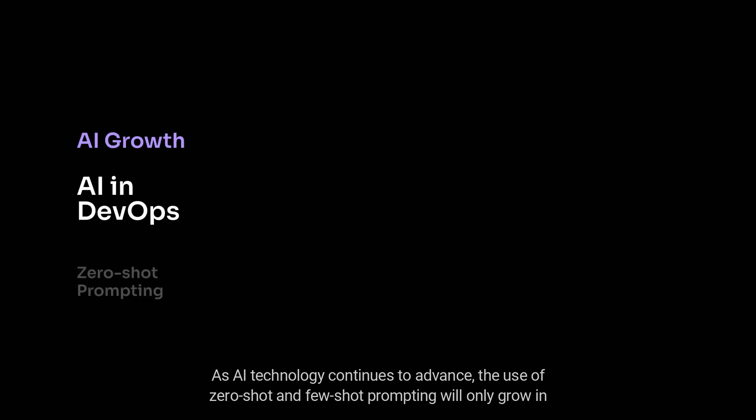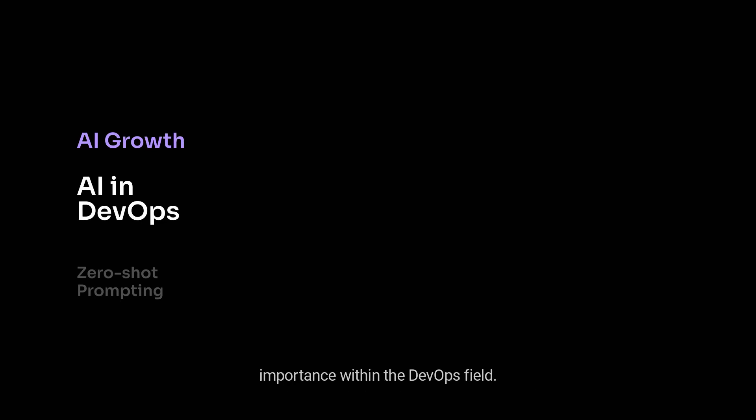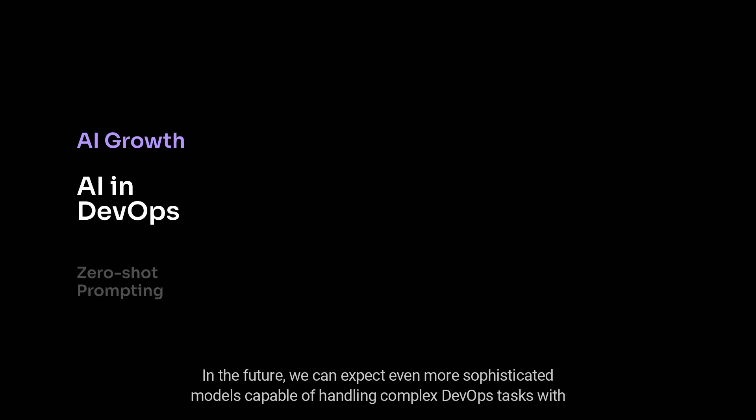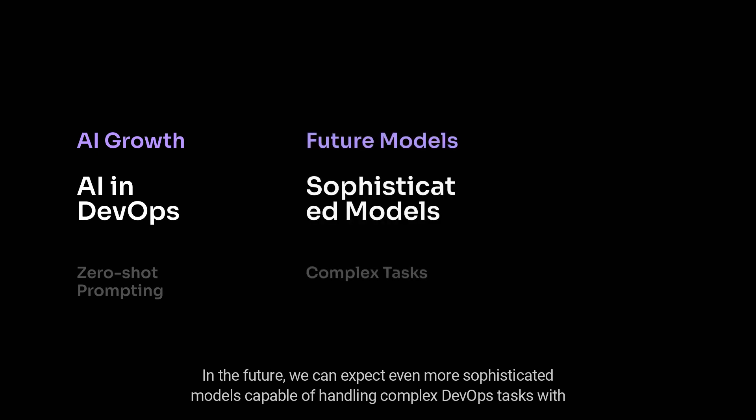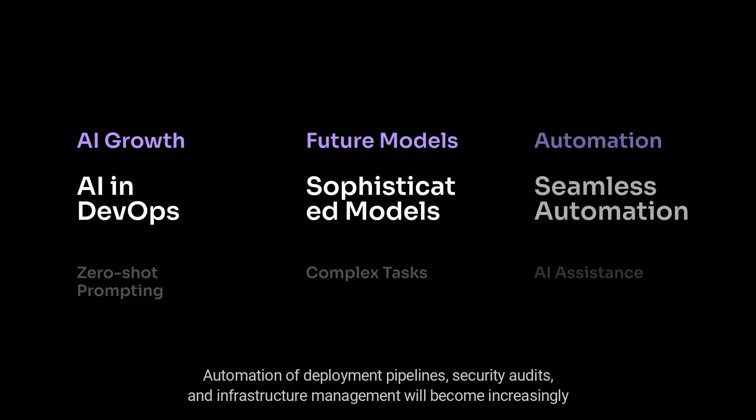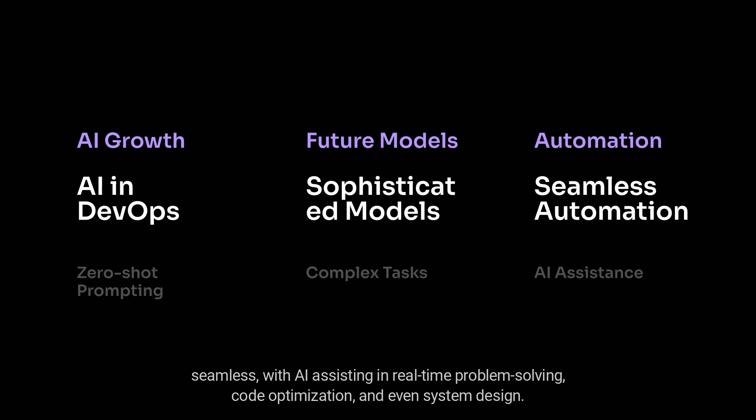As AI technology continues to advance, the use of Zero-shot and Few-shot prompting will only grow in importance within the DevOps field. In the future, we can expect even more sophisticated models capable of handling complex DevOps tasks with minimal human input. Automation of deployment pipelines, security audits, and infrastructure management will become increasingly seamless, with AI assisting in real-time problem solving, code optimization, and even system design.